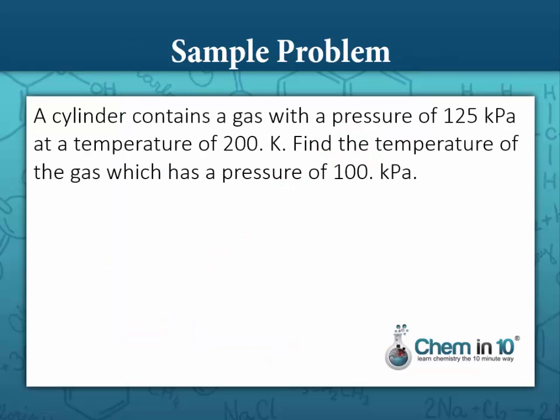Sample Problem: A cylinder contains a gas with a pressure of 125 kilopascals at a temperature of 200 Kelvin. Find the temperature of the gas which has a pressure of 100 kilopascals. So we want to find the temperature of a gas at 100 kilopascals. Let's call that T2. We're given P1, the initial pressure, 125 kilopascals, and T1 at a temperature of 200 Kelvin.